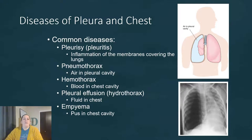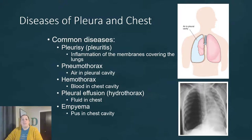Empyema is pus in the chest cavity, which is often the result of a ruptured lung abscess. Those abscesses discussed previously, if they rupture, can cause pus to develop in the pleural cavity.